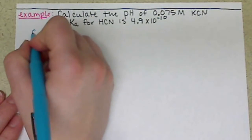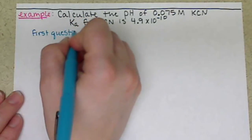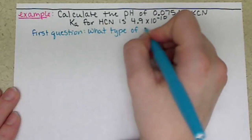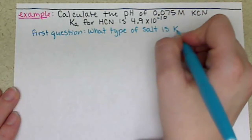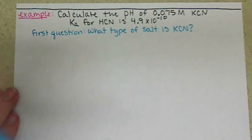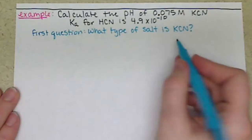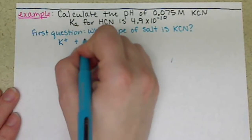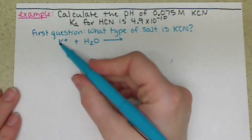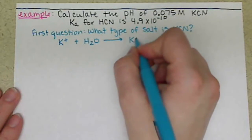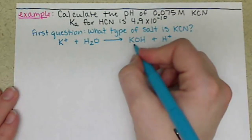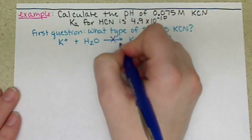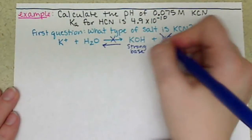Our first question is we have to figure out what type of salt KCN is. We want to look at each ion and how it's going to interact with water. So we have K+ plus water. If this is going to react, K+ is going to kick out H+, so we'll have KOH plus H+. But KOH is a strong base, so in fact the reverse happens — we are not producing H+.